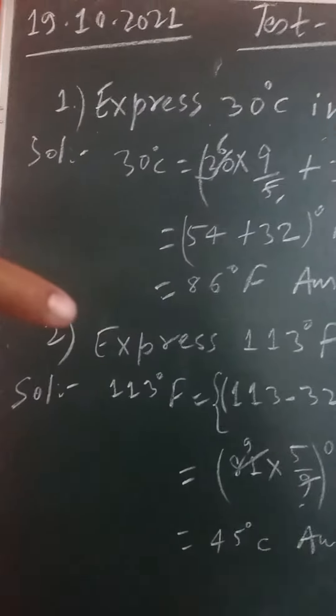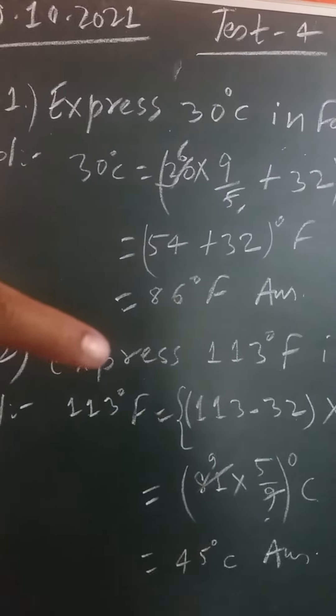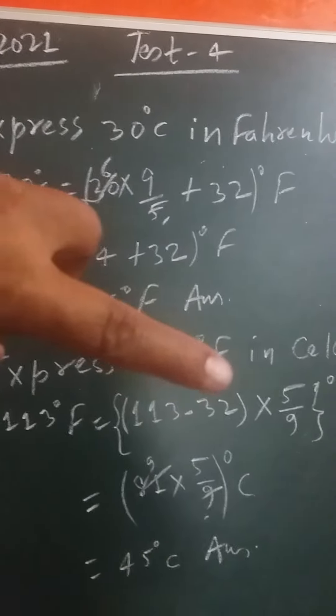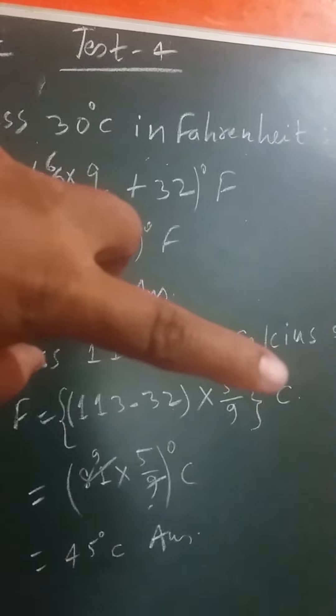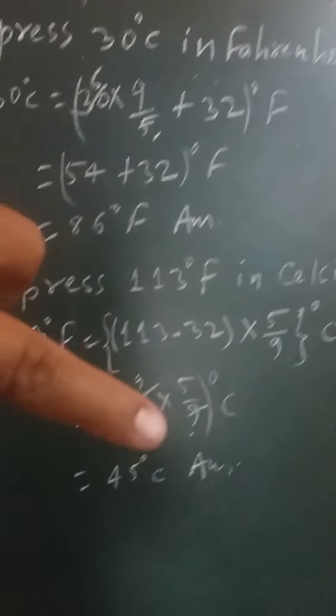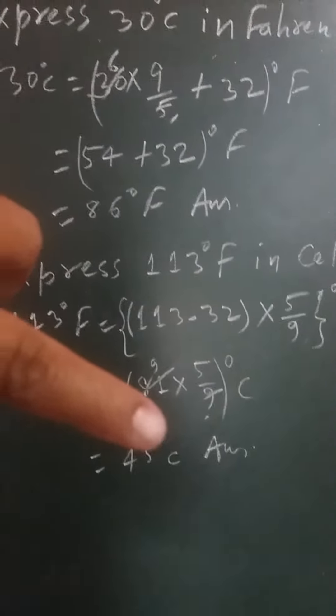Next question is express 113 degree Fahrenheit in Celsius scale. At this time we have to write down 113 degree Fahrenheit equals 113 minus 32 into 5 by 9 degree Celsius, that is 81 into 5 by 9 degree Celsius, that is 45 degree Celsius.